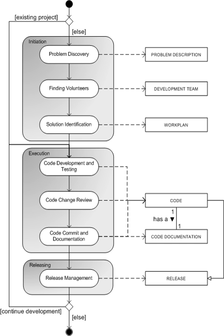Fuggetta argues that rapid prototyping, incremental and evolutionary development, spiral lifecycle, rapid application development, and recently extreme programming and the agile software process can be equally applied to proprietary and open-source software. He also pinpoints extreme programming as an extremely useful method for open-source software development. More generally, all agile programming methods are applicable to open-source software development because of their iterative and incremental character. Other agile methods are equally useful for both open and closed-source software development.